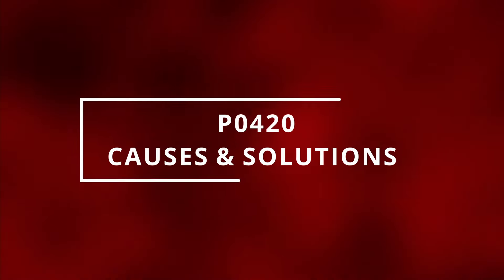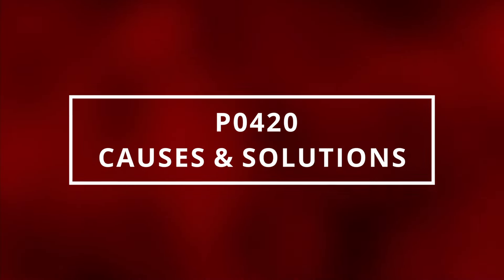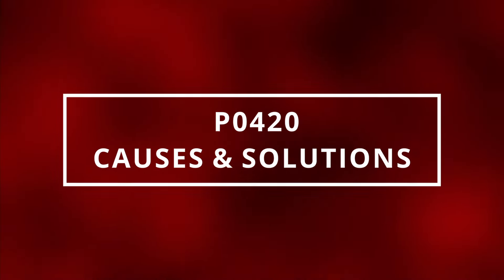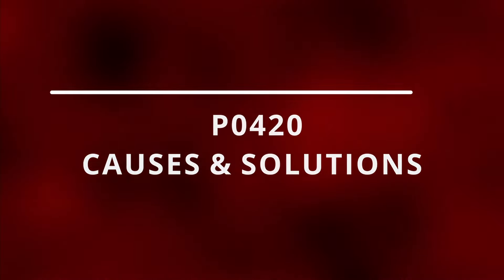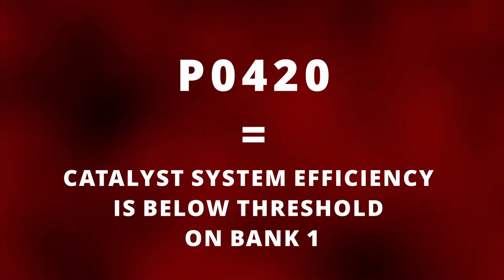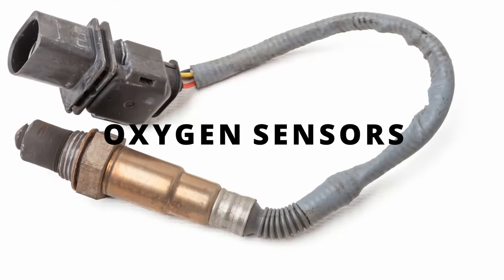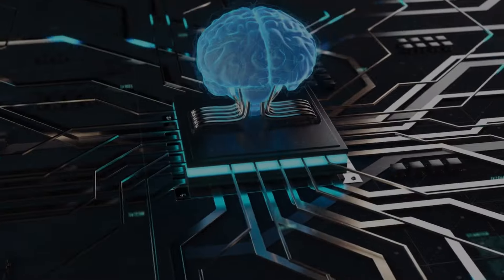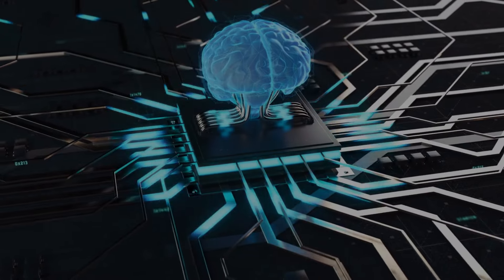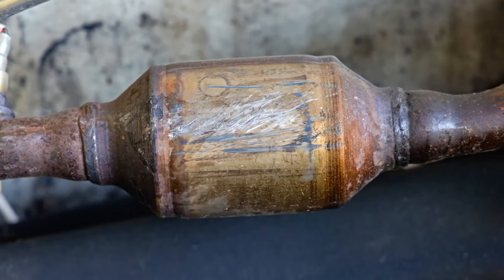Easy Autofix here, and today we're going to learn the causes and solutions of the P0420 code. The P0420 code means the catalyst system efficiency is below threshold on bank one. This basically means the oxygen sensors are sending the engine control module a reading indicating that the catalytic converter is not working effectively.